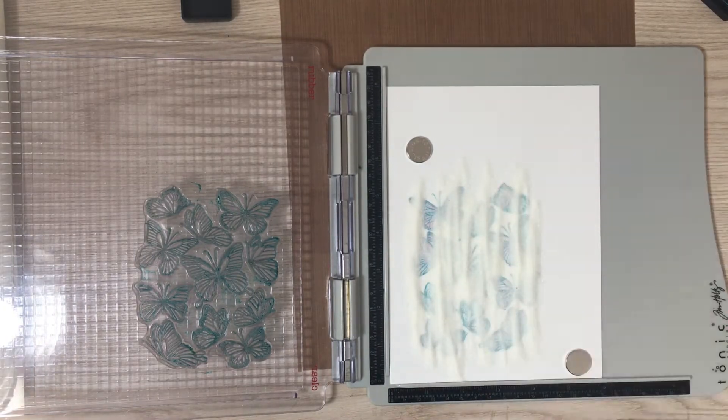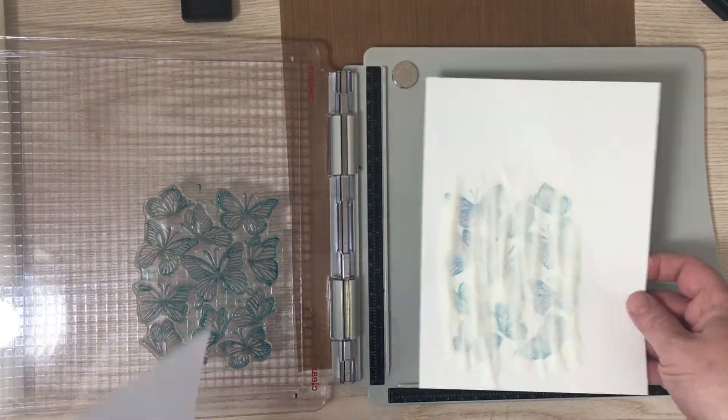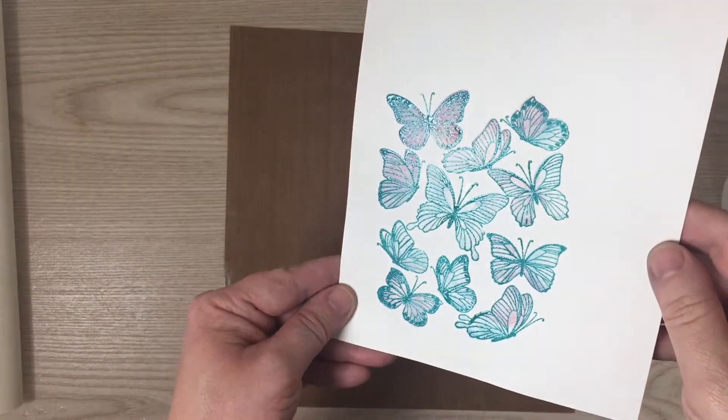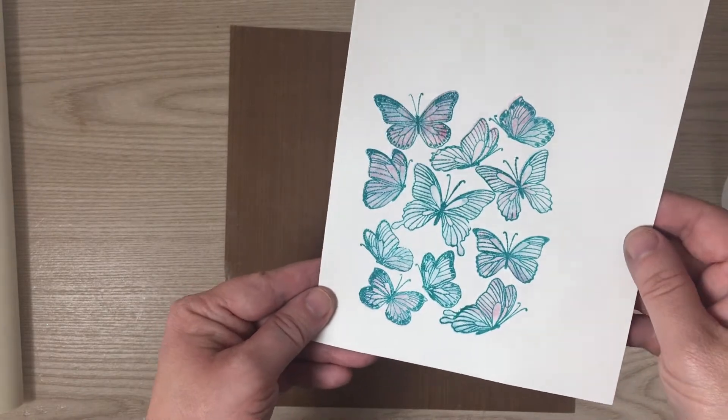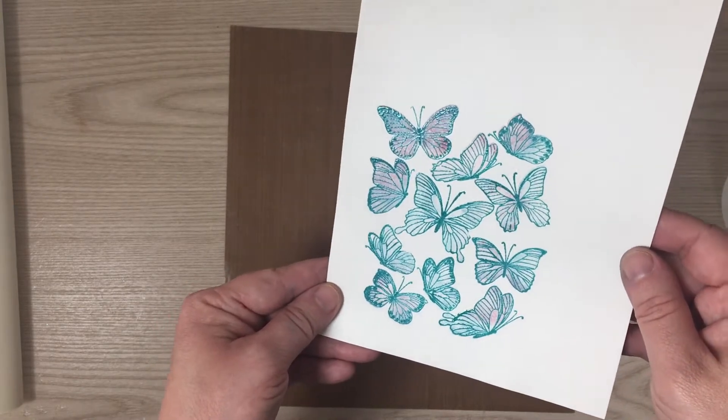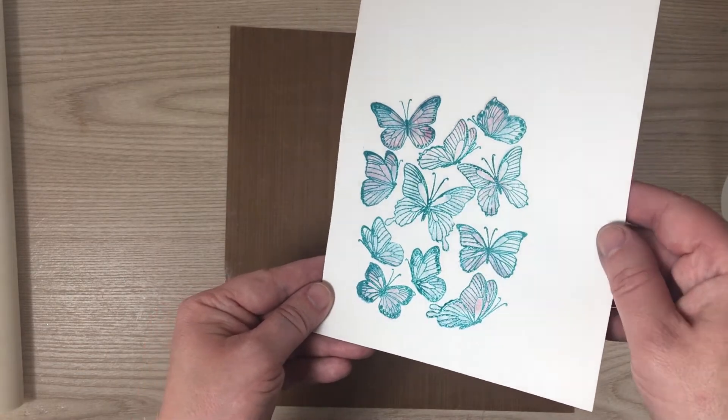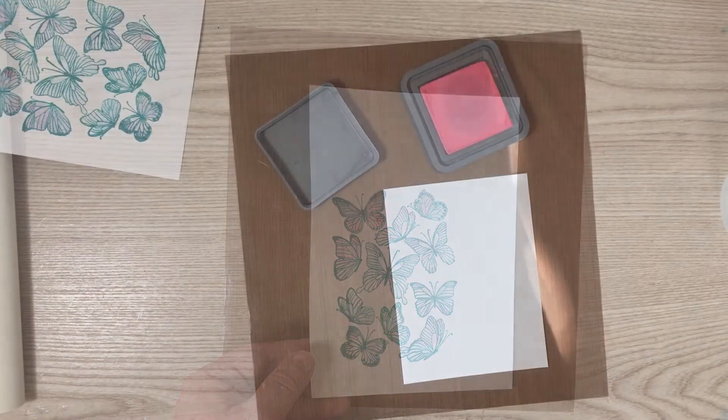And then I went ahead and I applied my clear embossing powder and then I'm going to heat set that. And I think what you get is really nice. I really enjoy all that shine you get with the clear embossing powder and since I use the Peacock Feathers that really shines through really nicely too. So I'm really happy with the way the colors came out on this card.